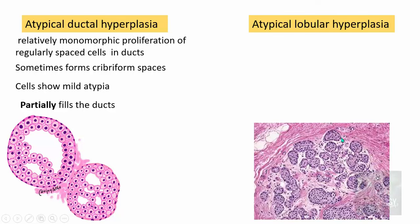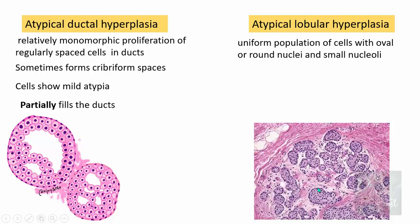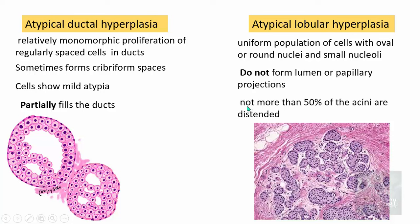Atypical lobular hyperplasia involves the lobules and shows a uniform population of cells with oval or round nuclei and small nuclei. Unlike ductal hyperplasia, these cells do not form lumens or papillary projections. An important criterion is that no more than 50% of the acini are distended — most acini remain of normal size. This less-than-50% distension distinguishes atypical lobular hyperplasia from lobular carcinoma in situ, which will be discussed in the next part.